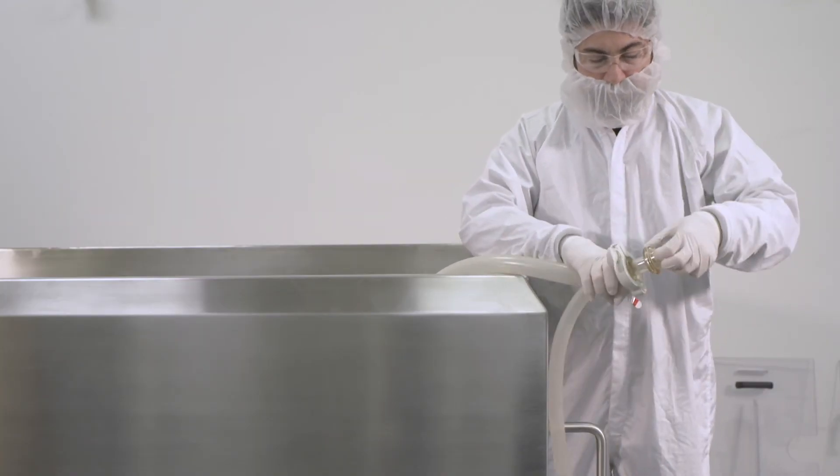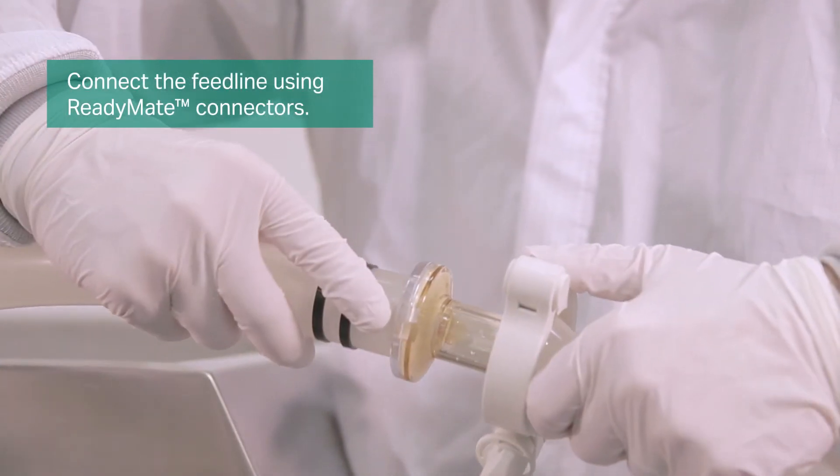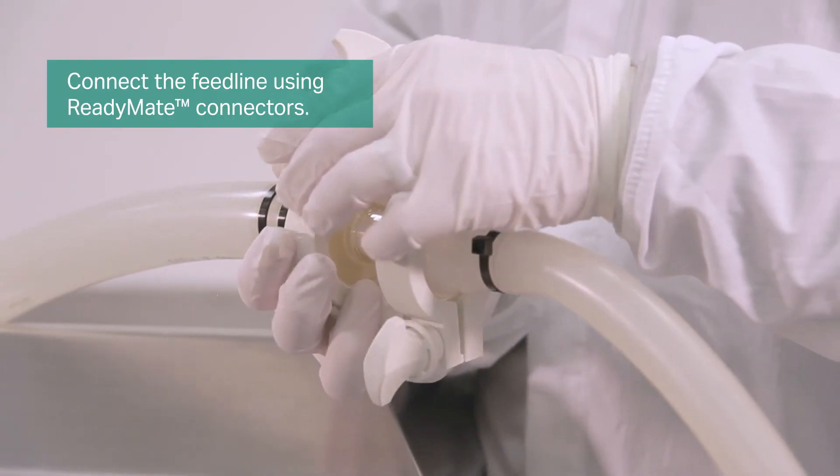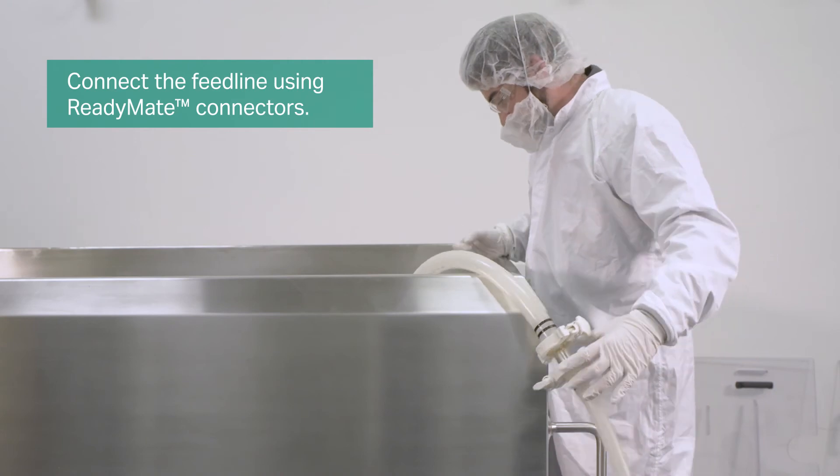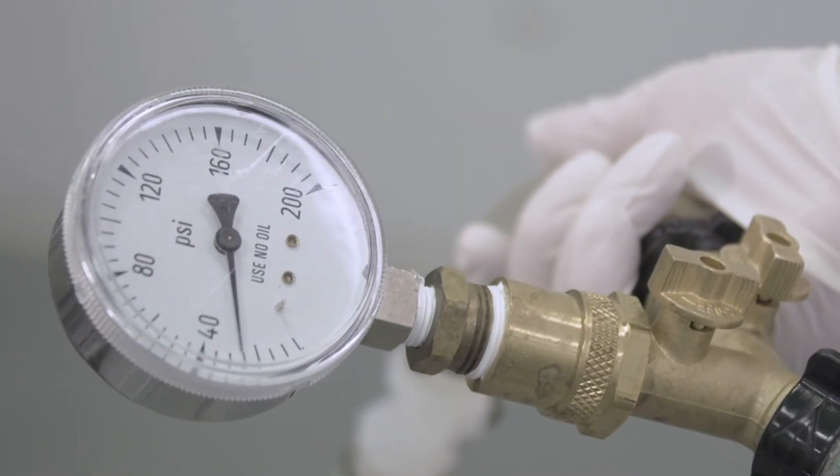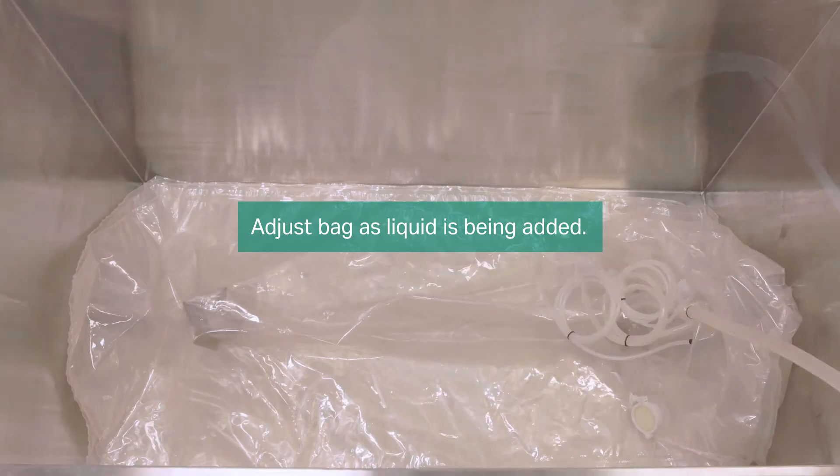Connect the feed line using ReadyMate connectors. Add liquid. Adjust bag as needed during liquid addition.